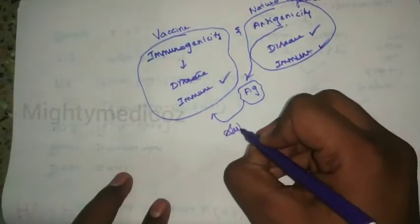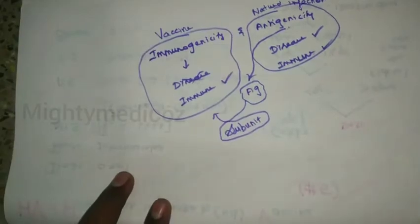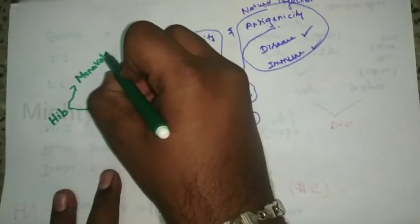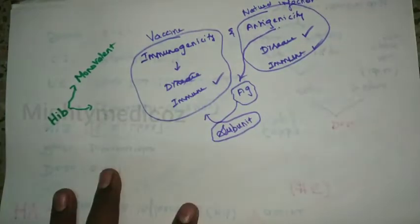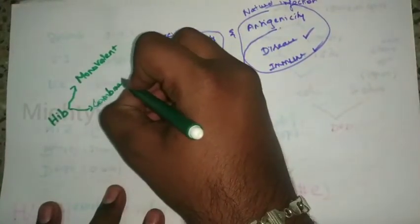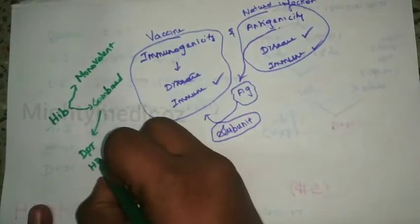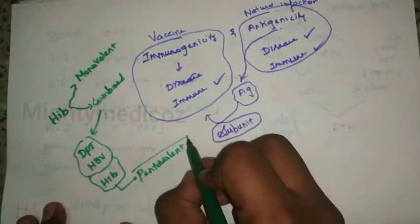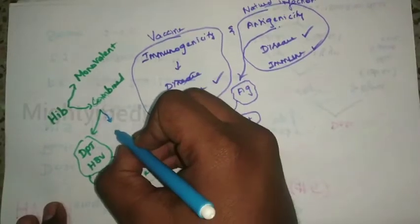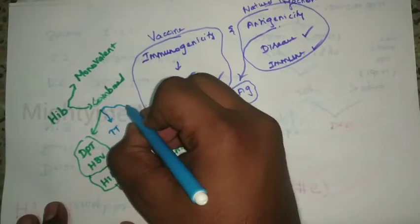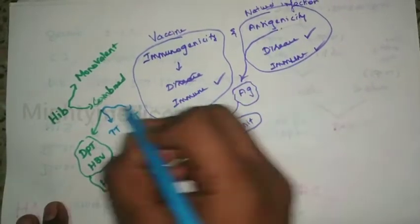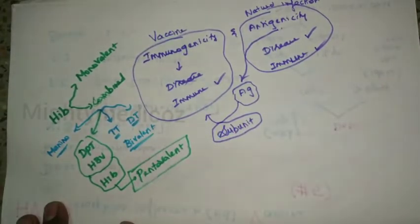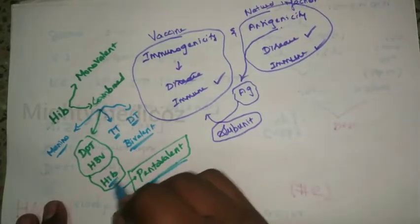We get the immunogenic property in the vaccine, which is why it is called a subunit vaccine. The Haemophilus Influenzae B vaccine has two types available: one is monovalent and the other is a combined vaccine. We can combine it as DPT-HBV, also known as the pentavalent vaccine, following the National Immunization Schedule. It can also be combined with tetanus toxoid, diphtheria toxin, meningococcal vaccine, and bivalent vaccines. Under the national immunization schedule, pentavalent vaccine is one of the components containing Hib.